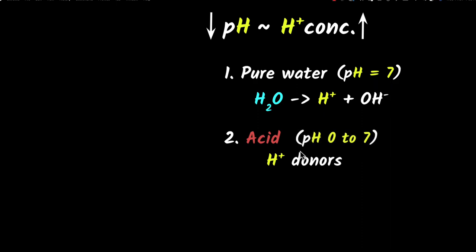Acidic solutions have a pH ranging from 0 to 7. If the pH is close to 0, like 0.5, 1, or 2, that's very acidic - very high concentration of H+ ions. On the other hand, if the pH is close to 6.5 or 6.7, it's very low acidity, very close to being neutral.